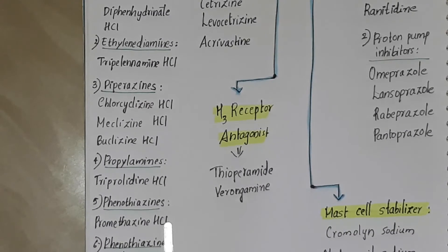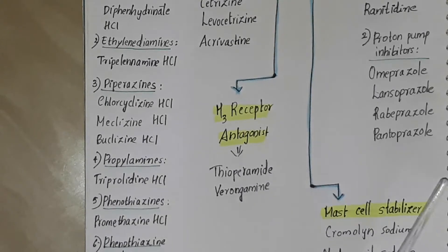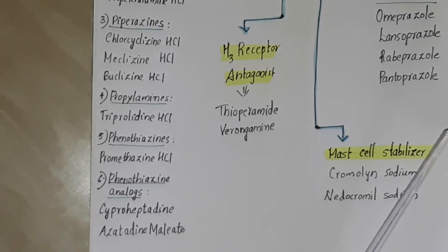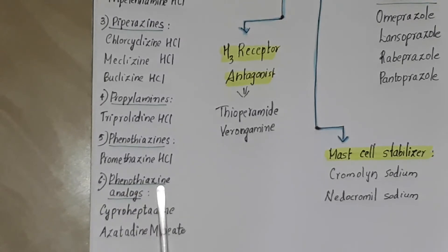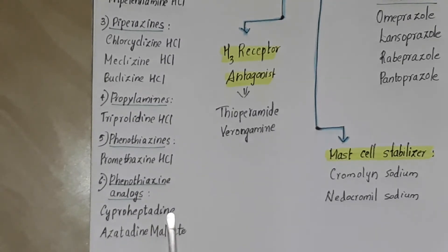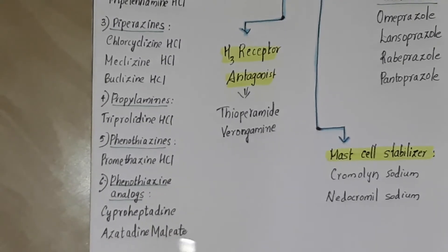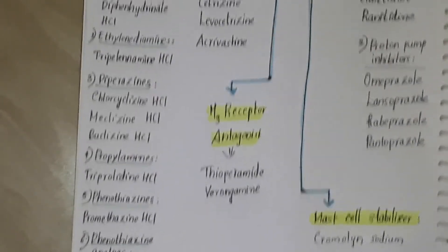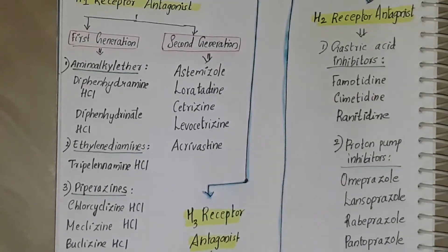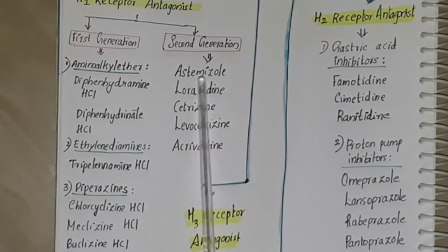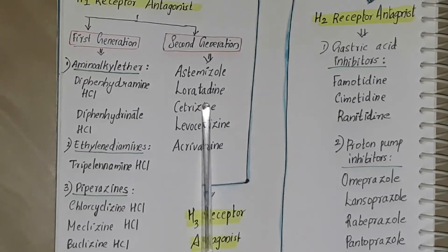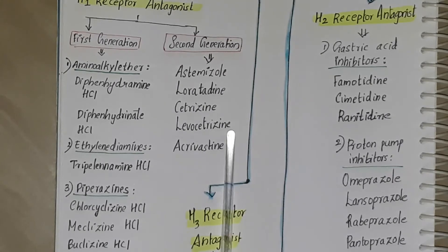Also in the first generation are phenothiazines: promethazine hydrochloride; phenothiazine analogues: ciproheptadine and azotidine malleate. The second generation drugs are acetamizole, laurotidine, cetricin, levocetricin, and acrivestin.